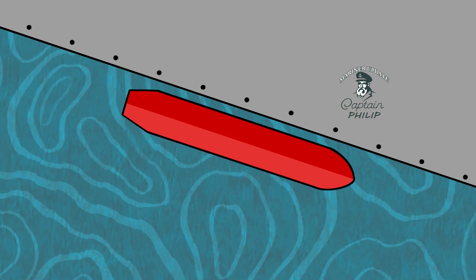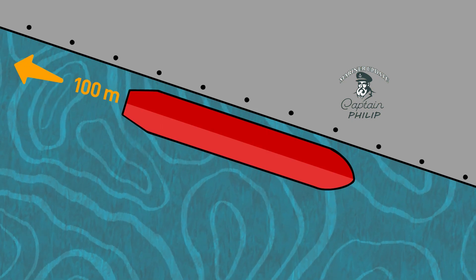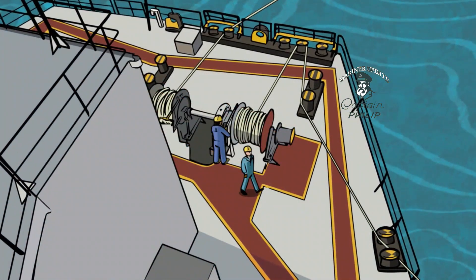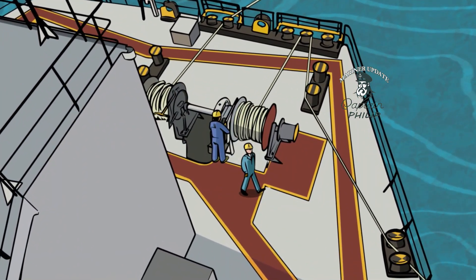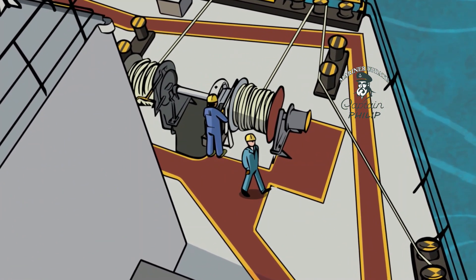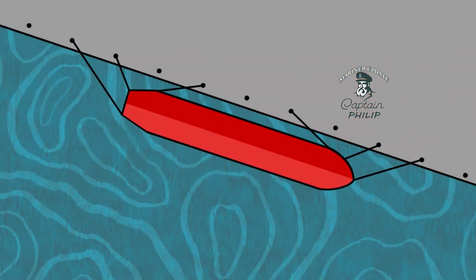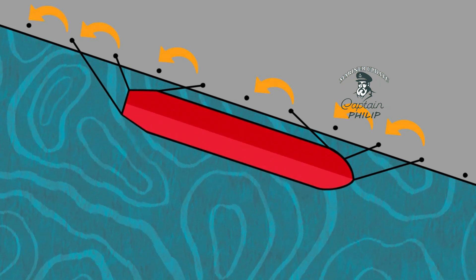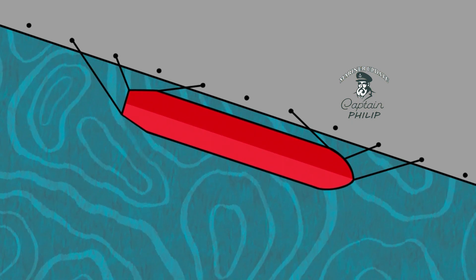In order to reposition the vessel, the terminal requested the vessel's master to shift ship approximately 100 meters astern. At the required time, the crew were ordered to their mooring stations and the main engine was placed on standby, ready for use. The plan was to move the vessel astern using only the mooring lines, which were to be transferred from bollard to bollard by the shore linesmen, with an ebb tide running from ahead.